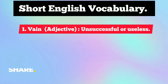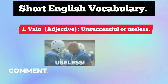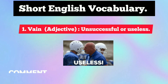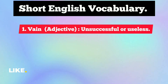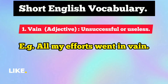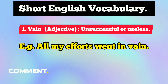The first short English vocabulary word is 'vain.' It is an adjective, and it means unsuccessful or useless — something or someone that is useless or unsuccessful. For example: 'All my efforts went in vain,' meaning they were useless.